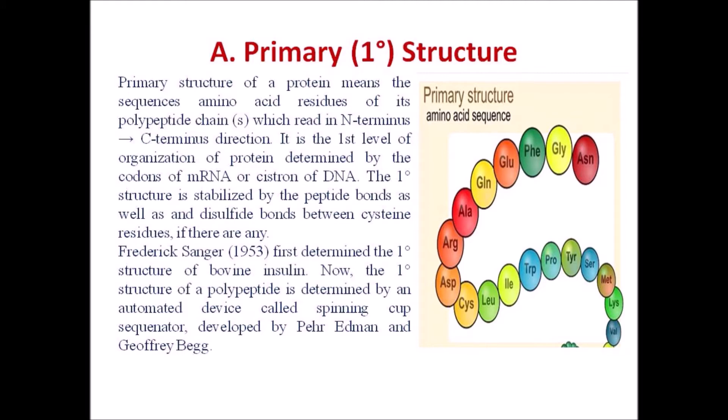The primary structure is stabilized by the peptide bond as well as disulfide bonds between cysteine residues, if any. Frederick Sanger in 1953 first determined the primary structure of bovine insulin. The primary structure of a polypeptide is determined by an automated device called the spinning cup sequenator, developed by Per Edman and Geoffrey Beck.